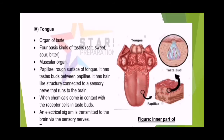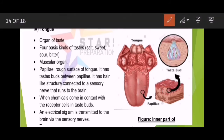اس کے بعد ہے tongue — the organ of taste. There are four basic kinds of taste: salty, sweet, sour and bitter. Tongue ایک muscular organ ہے۔ The most important part is the papillae — the rough surface of the tongue. Papillae کے بیچ میں taste buds ہوتے ہیں۔ In this way, through these taste buds, whatever we taste is communicated to us.